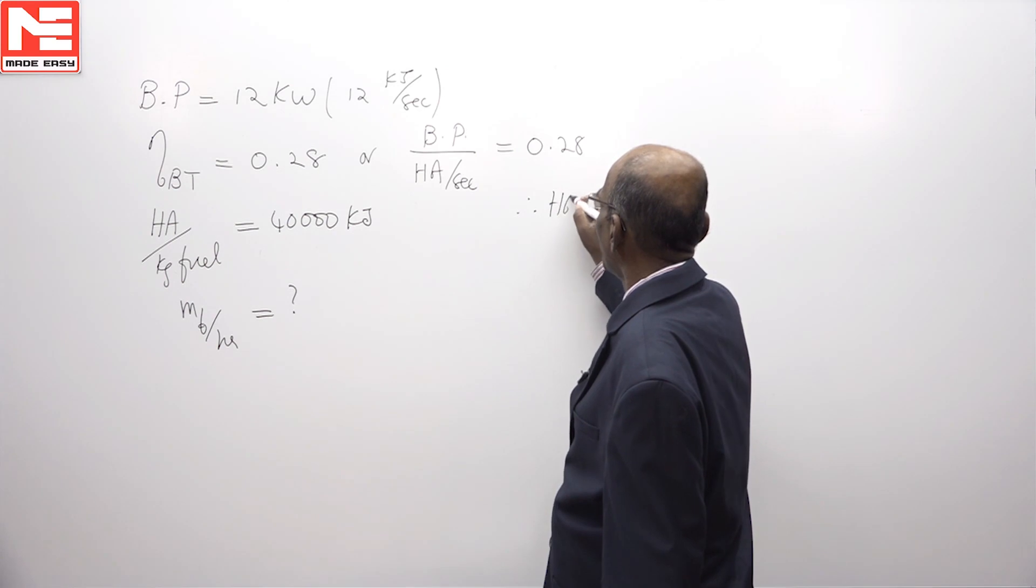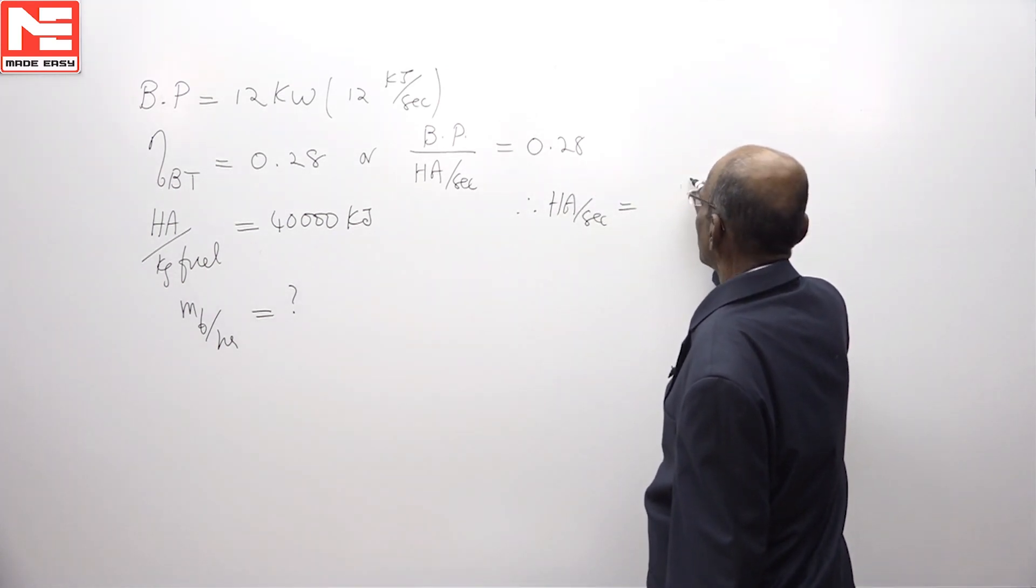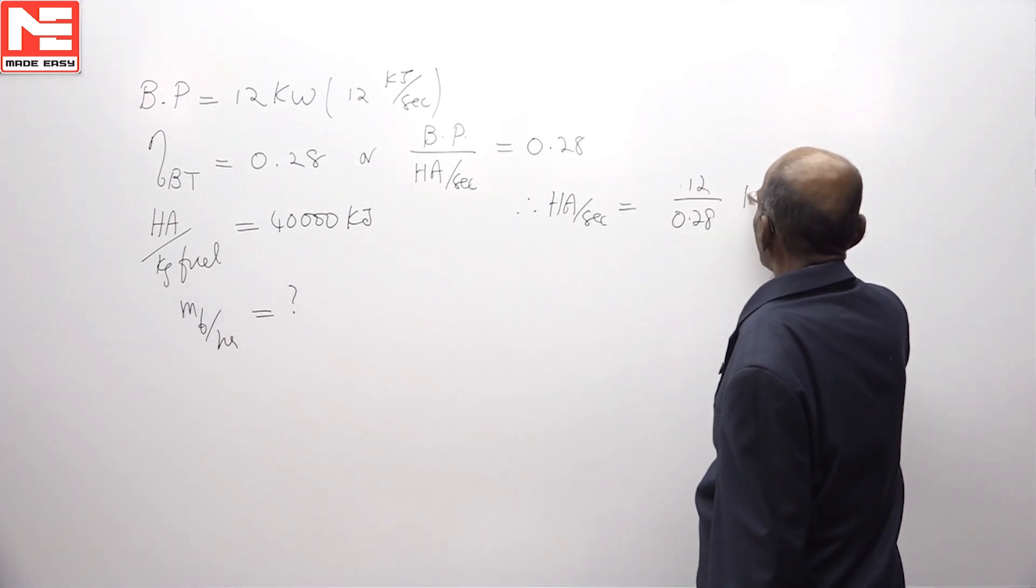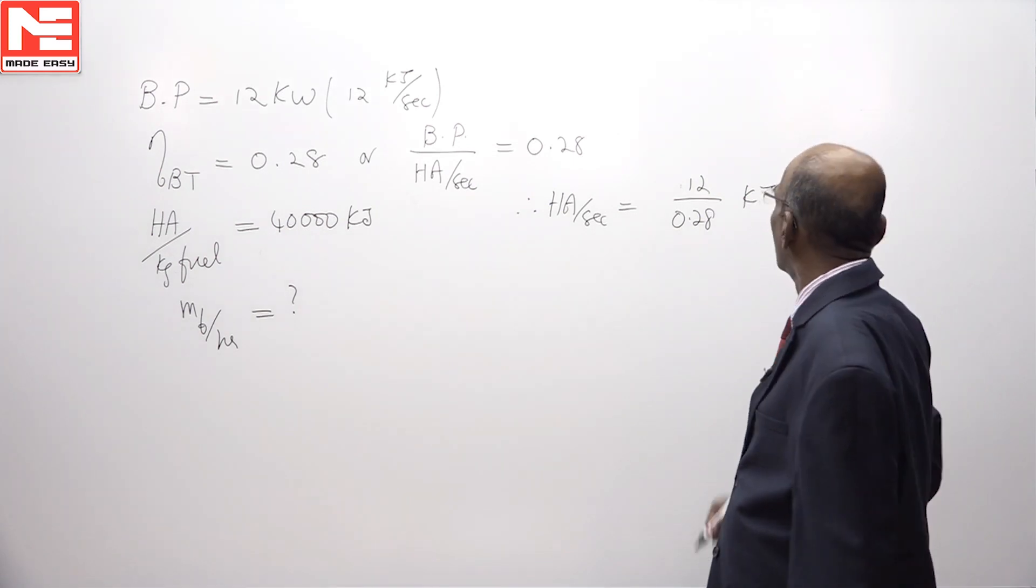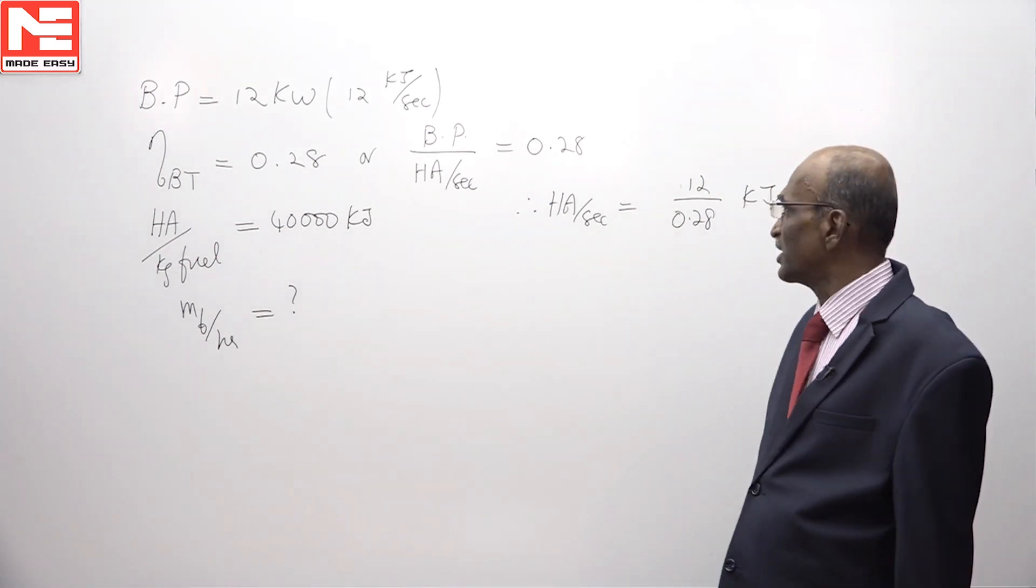So from this we will get the heat added per second given by the brake power which is 12 kilowatts by 0.28. The heat added will also be, of course, in kilojoules per second.